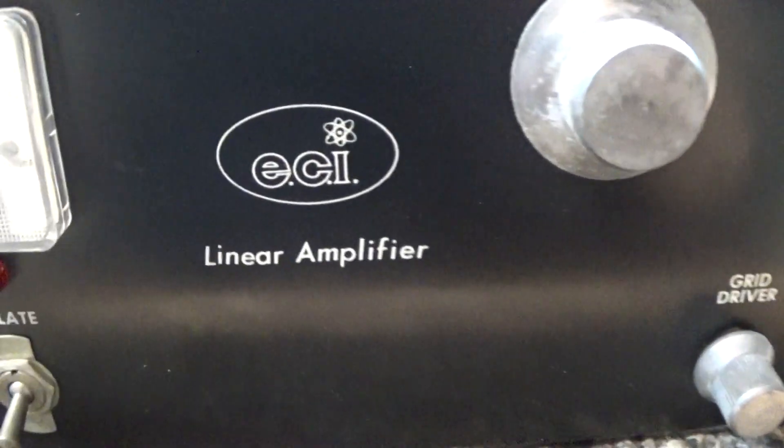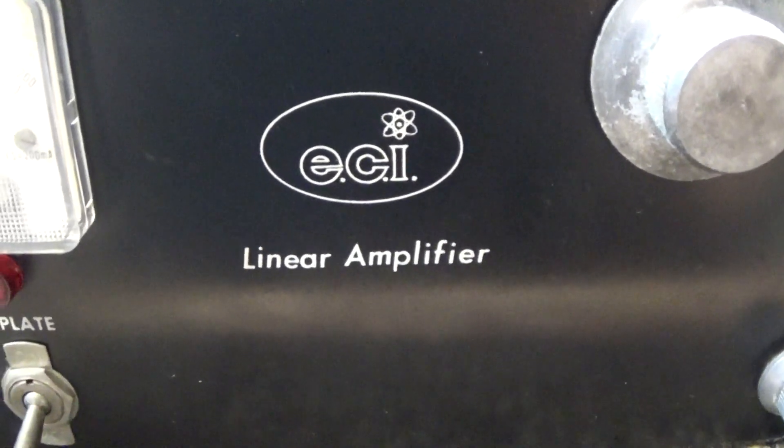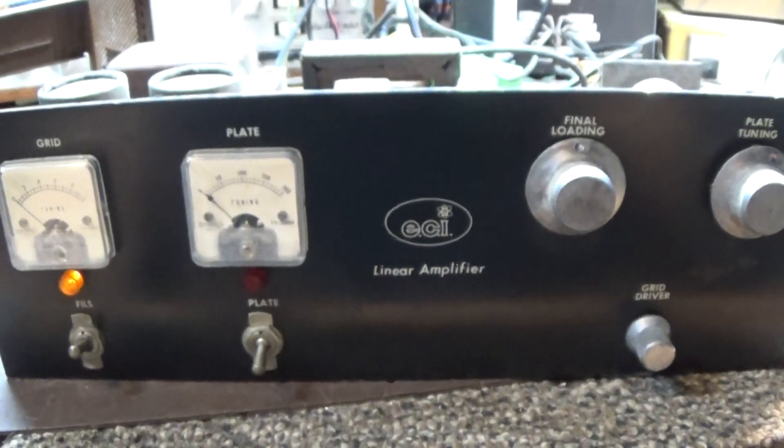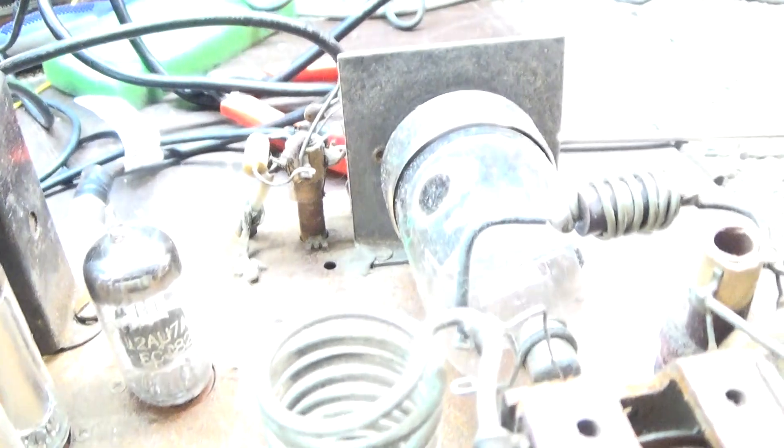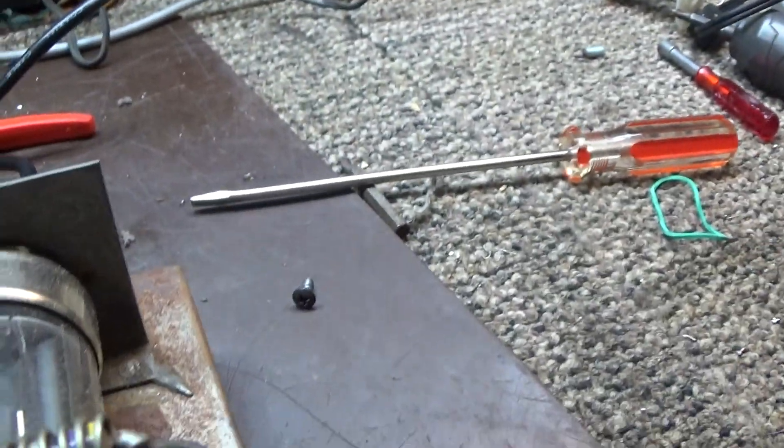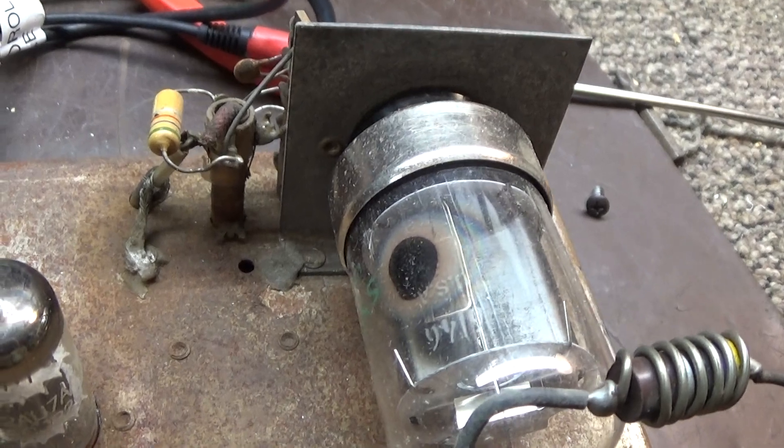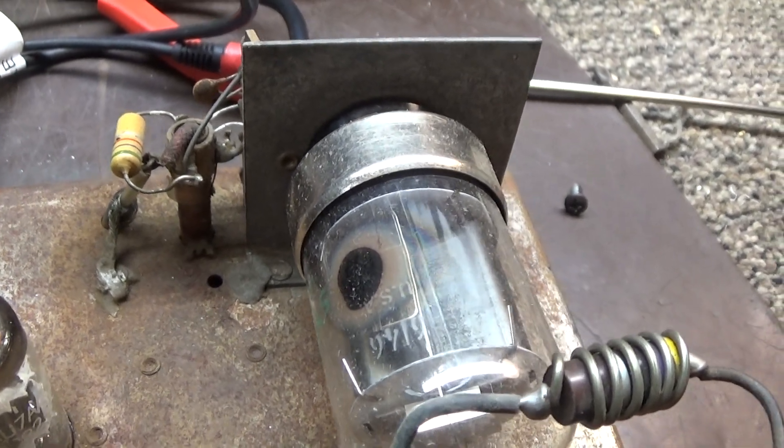Alright, going to do this video on this Courier or ECI linear amplifier. This basically is just a little 40-50 watt modulator, has one 6146 tube for the output.